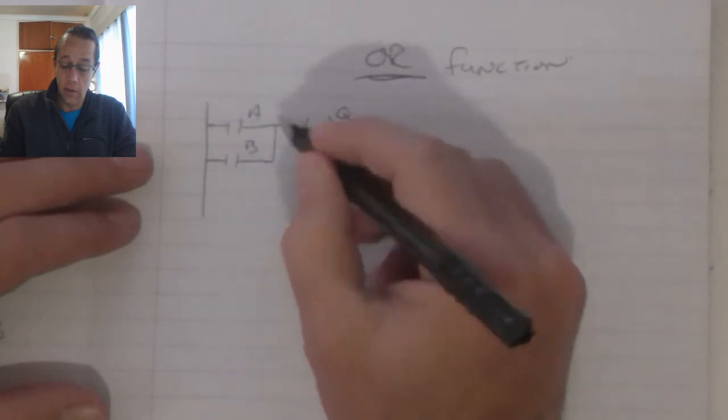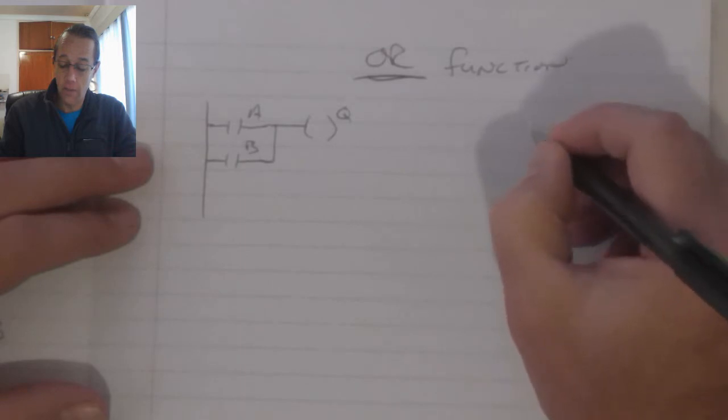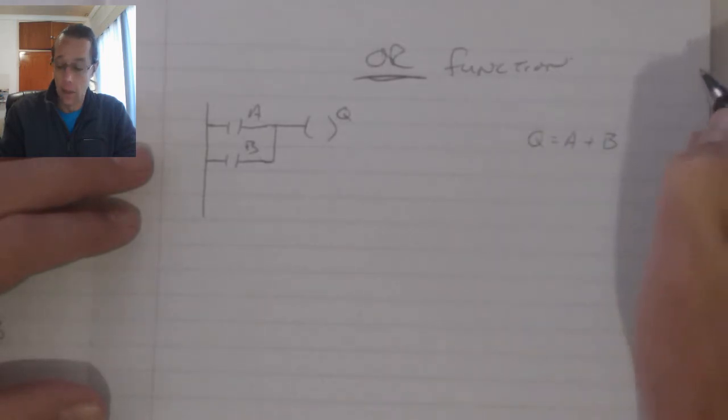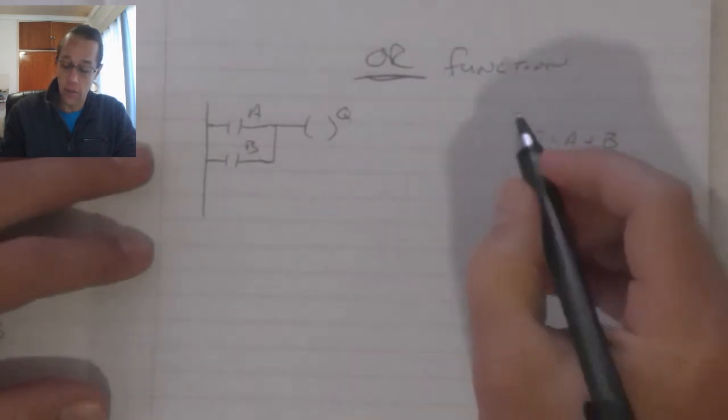Now, the logic function for this is the ALL gate or the ALL function and it is represented as A plus B. That plus represents the ALL function when it comes to logic expressions.